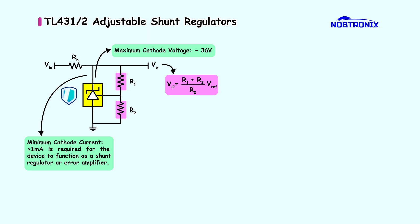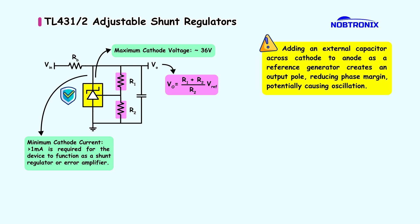While TL431 is stable without an output capacitor, adding one can improve transient response. However, when a capacitor is added across the cathode and anode, it introduces an output pole that can reduce phase margin and potentially cause oscillation.